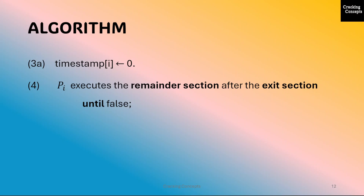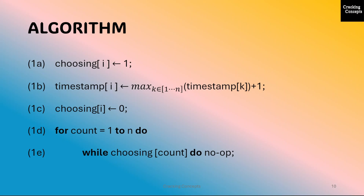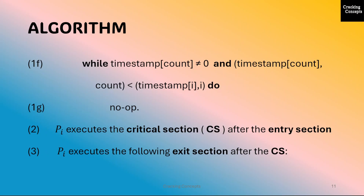Bounded waiting is also satisfied because each time a process j can overtake process i at most once after i has completed choosing its timestamp. The second time j chooses its timestamp, that value will necessarily be larger than i's timestamp if i has not yet entered the critical section. Progress is guaranteed because the lexicographic order is a total order, and the process with the lowest timestamp at any time in the loop — checked in lines 1d to 1g — is guaranteed to enter the critical section.